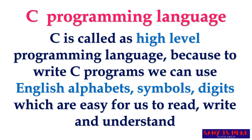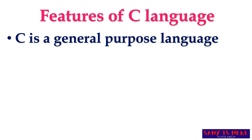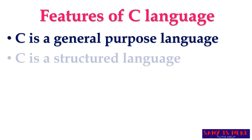C has alphabets, symbols, and digits. Now let us learn what are the features of C. The first feature is that C is a general purpose language, which means we can write C programs for general purposes or to solve general problems like a billing system or calculation problems. It is not too specific — you can write it for general problems, which makes it very powerful. C is also a structured language, meaning C has its own structure we need to follow.